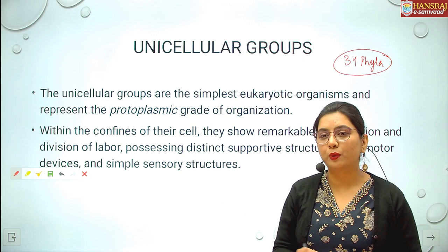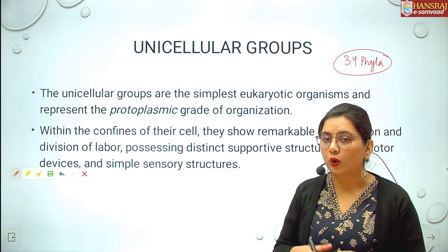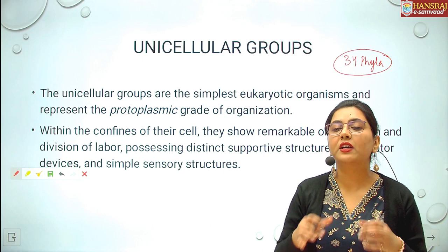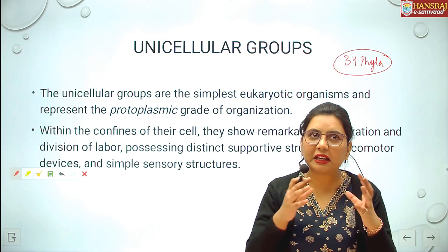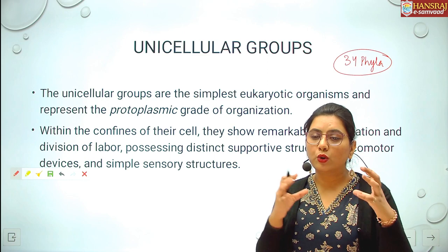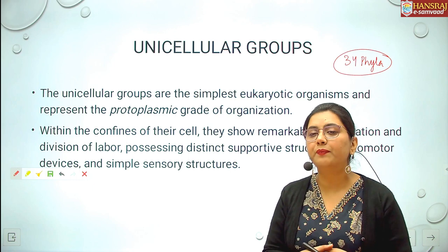All these phyla trace their origin to the Cambrian explosion which occurred 600 million years ago. At that point, the diversity of animal life was much more. A lot of evolutionary diversity happened and we have different forms of life existing presently. Several attempts since Aristotle's time have been made to classify them, grouping organisms into categories dependent upon their body plan, habit, habitat, developmental history and other things.